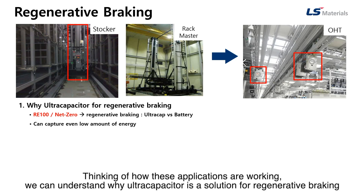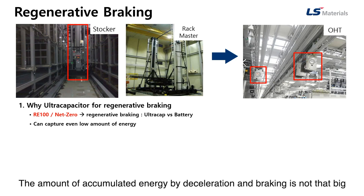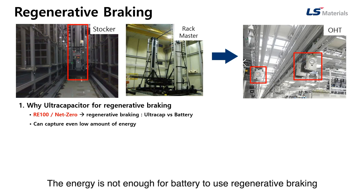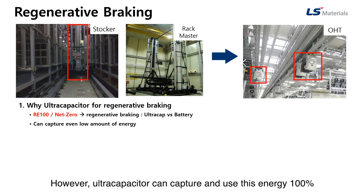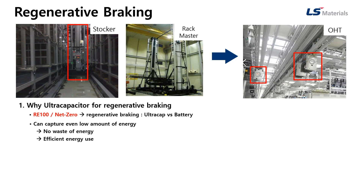By thinking about how these applications work, we can understand why Ultra Capacitor is a solution for regenerative braking. These machines move short distances or are small in size, which means the amount of energy accumulated during deceleration and braking is not that large — not enough for a battery to use regenerative braking. However, Ultra Capacitor can capture and use this energy 100%, because its rapid charging and discharging allows quick energy absorption and release. So Ultra Capacitor is capable of efficient use of regenerative braking even in low amounts, with no waste of energy.